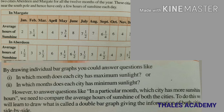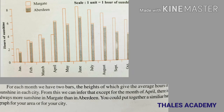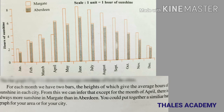However, to answer questions like in a particular month which city has more sunshine hours, we need to compare the average hours of sunshine in both cities. To do this, we will learn to draw what is called a double bar graph, giving the information of both cities side by side. For each month we have two bars, the heights of which give the average hours of sunshine in each city. From this we can infer that except for the month of April, there is always more sunshine in Margate than in Aberdeen. Here one unit equals one hour of sunshine.